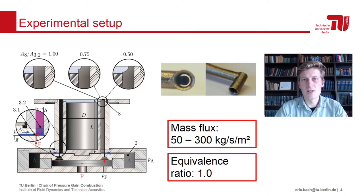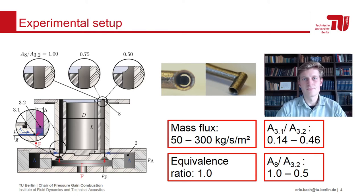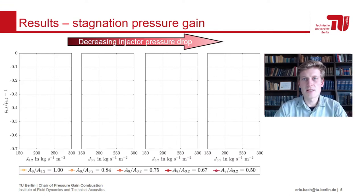The mass flux available in this facility spans a range between 50 and 300 kg per second per square meter. At stoichiometric conditions, this corresponds to 0.3 to 1.9 megawatt of thermal power. Overall, we studied four different air injectors with area ratios from 0.14 to 0.46 and five different outlet restrictions from fully open at 1 all the way to 50% blocked. We are going to look at results discriminated by air injector pressure drop and outlet blockage for a mass flux range of 150 to 300 kg per second per square meter. Below that, it cannot be ensured that the exit is fully choked and thus the measured stagnation pressure is not meaningful.